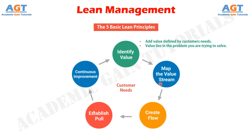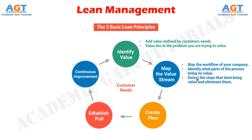Number two: value stream mapping. This is the point where you literally need to map the workflow of your company. It has to include all actions and people involved in the process of delivering the end product to the customer. By doing so, you will be able to identify what parts of the process bring no value. Applying the lean principle of value stream mapping will show you where value is being generated and in what proportion different parts of the process do or do not produce value. When you have your value stream mapped, it will be much easier to see which processes are owned by what teams, who is responsible for measuring, evaluating, and improving that process, and which steps don't bring value so you can eliminate them.